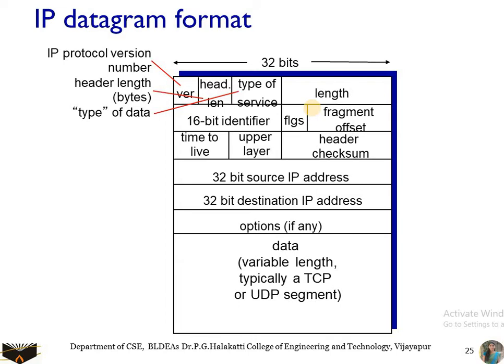Next we have the type of service (TOS). These bits were included in the IPv4 header to allow different types of IP datagrams to be distinguished from one another. For example, it is useful to distinguish real-time datagrams from non-real-time traffic datagrams, differentiating the type of service being used.